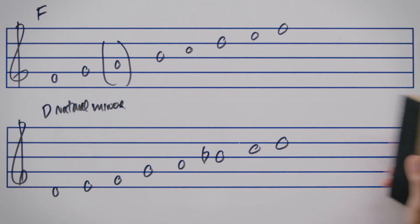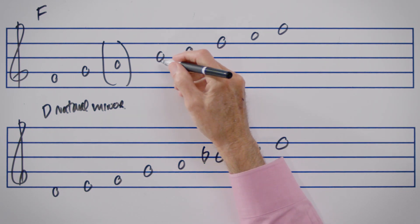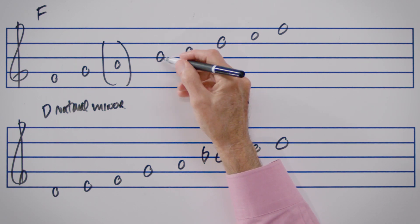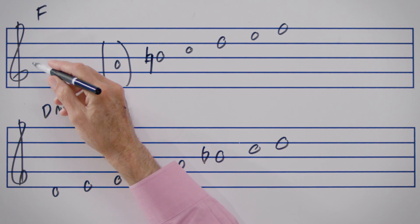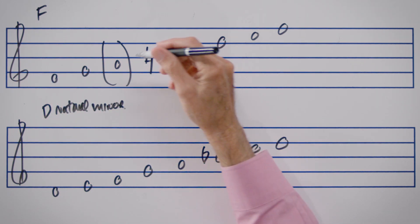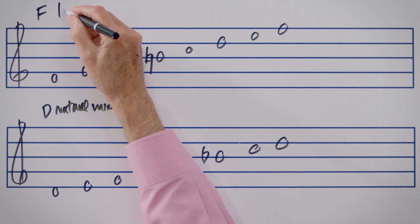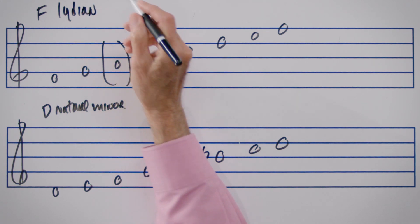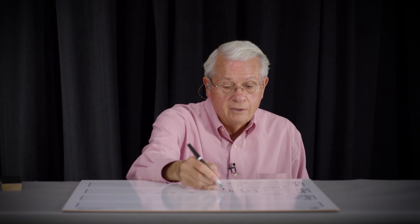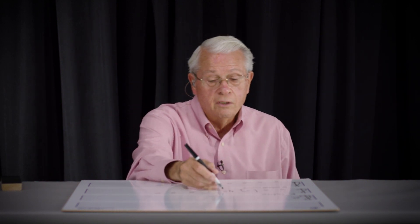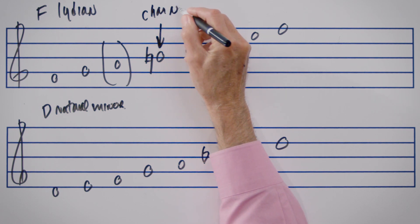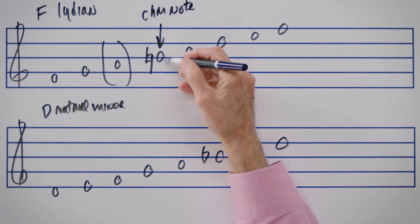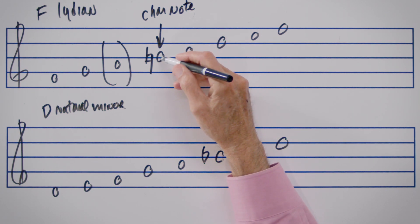The modal scales that contain the A natural would be the Lydian scale. The F Lydian scale is like the F major scale except that the fourth scale degree is a half step higher. So if there were a key signature here, we would mark the B as a B natural. The F Lydian scale — spelled L-Y-D-I-A-N — is a very popular scale. The B natural is the note that makes it different from an F major scale, so we refer to the B natural as the characteristic note. The characteristic note of a Lydian scale is its fourth scale degree, which is a half step higher than it would be in a regular major scale.